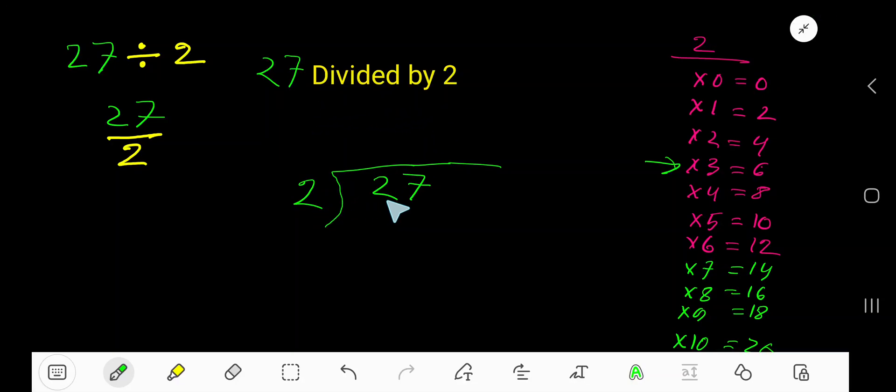27 divided by 2. 2 goes into 2 how many times? 2 goes into 2, 1 time. 1 times 2 is 2, subtract 0. Bring down this 7. 2 goes into 7 how many times? Look, 4 times 2 is 8, which is